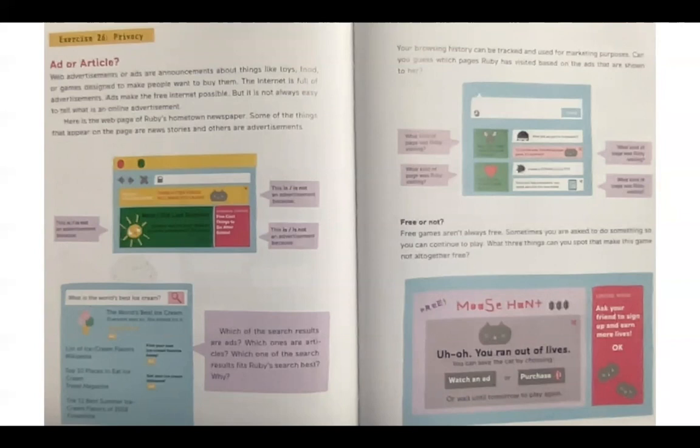Your browsing history can be tracked and used for marketing purposes. Can you guess which pages Ruby has visited based on the ads that are shown to her? Ruby, your rabbit needs more food. Order now. What kind of page was Ruby visiting? Ruby, buy this wonderful dress today. What kind of page was Ruby visiting? What did we get for homework? Try out the new free mouse hunt game. It's perfect. What kind of page was Ruby visiting? I made a goal. Since you like computers, you might also like this new tablet. What kind of page was Ruby visiting?